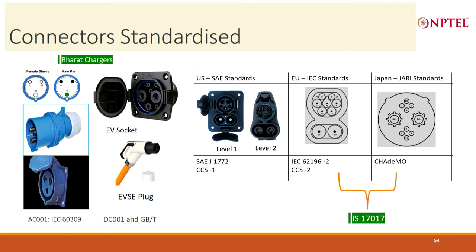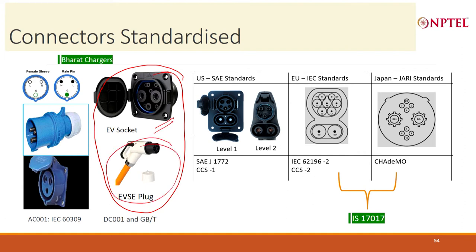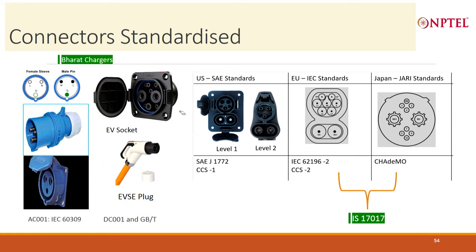If you talk about Bharat DC 001, this is the connector we use. This part is used on the charger side and this gun is actually hooked on to the charger. Whenever a vehicle comes, it is much like the petrol plugs — you take out your gun and put in the fuel. This is the GB/T connector, and Bharat DC 001 is derived from the GB/T standard and follows the GB/T connector.